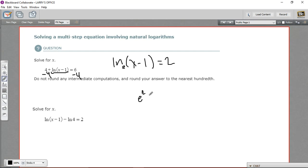And since we want to solve for x, getting x alone is pretty easy now, we just add 1 to both sides. So we have the expression e squared plus 1 equals x.